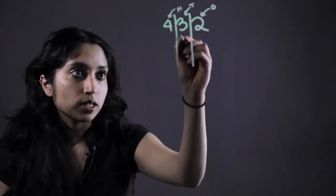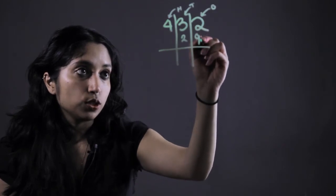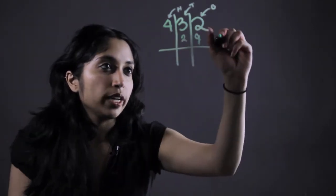So say we were subtracting 29. We can't take 9 from 2 because 2 is too small. So if we think of it this way, it almost says money.